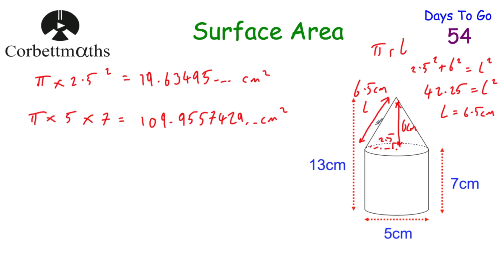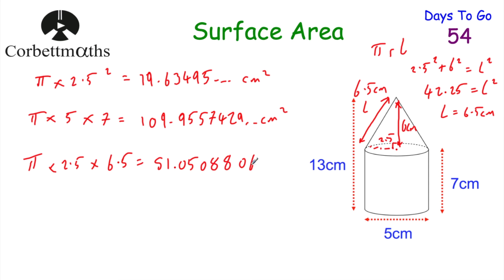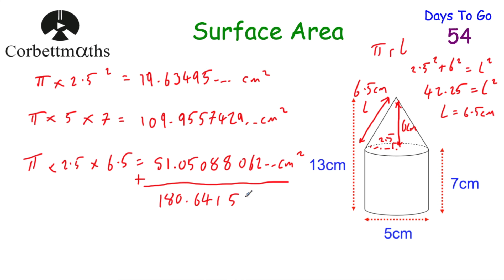So we do pi multiplied by 2.5 multiplied by 6.5, giving us 65 over 4 pi, or 51.05088062 centimetres squared. Adding all three parts together — the base circle, the cylinder's curved surface, and the cone's curved surface — gives us a total surface area of 180.6415776 centimetres squared, which rounds to 180.64 centimetres squared.